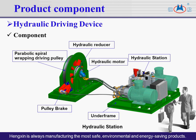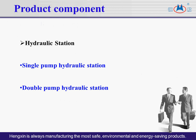Hydraulic driving devices are mainly composed of a hydraulic station, hydraulic reducer, hydraulic motor, parabolic spiral wrapping driving pulley, wheel brake, and under frame. The hydraulic station can be divided into a single pump hydraulic station and a double pump hydraulic station according to its structure.